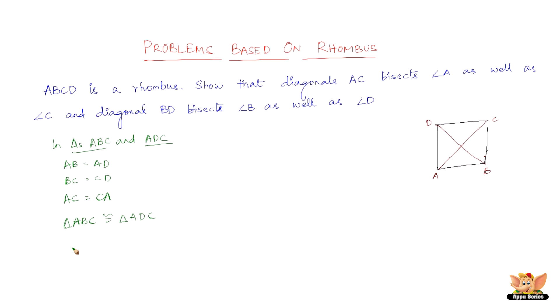So therefore, since the two triangles are congruent to each other, we can say that angle BAC equals angle DAC. Now why is this? Because CPCTC, that is corresponding parts of congruent triangles are equal. At the same time, we can also say that angle ACD equals angle ACB.